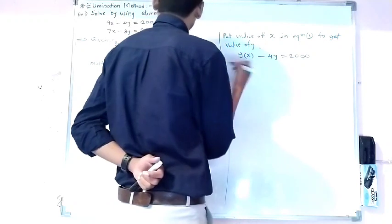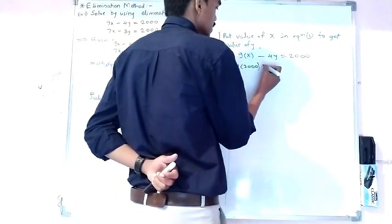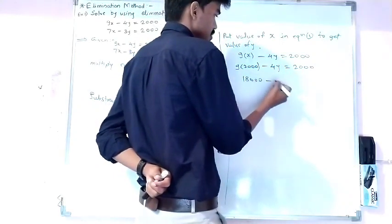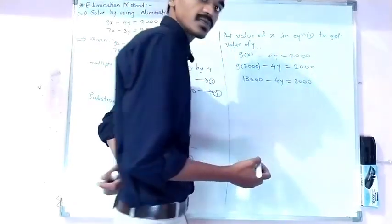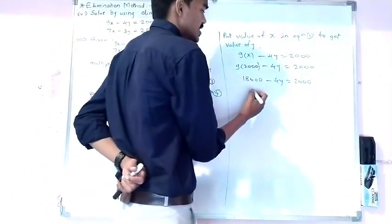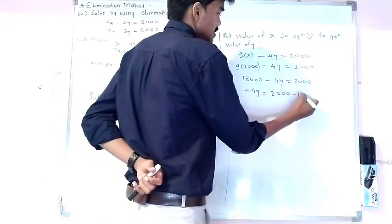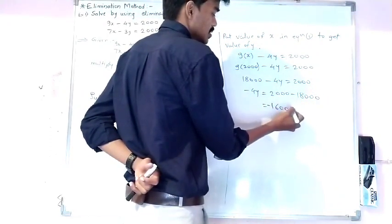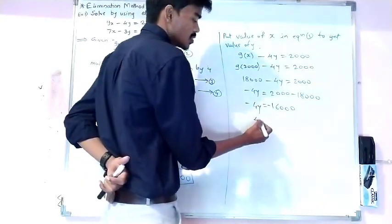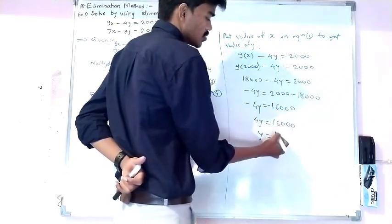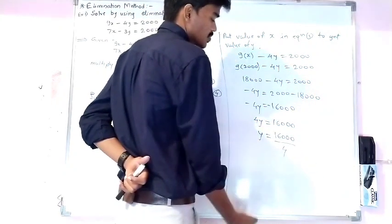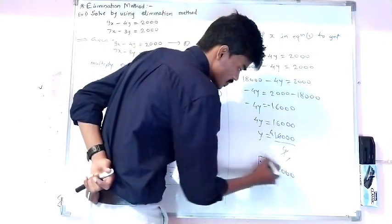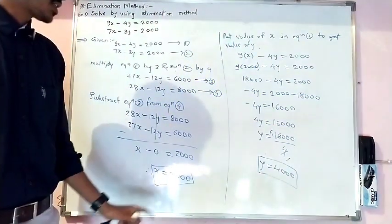Substituting x equals 2000: 9 times 2000 minus 4y equals 2000, which gives 18000 minus 4y equals 2000. Moving 18000 to the other side: 4y equals 18000 minus 2000, which is 16000. So y equals 16000 divided by 4, giving y equals 4000.